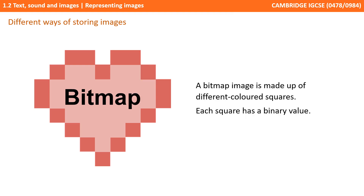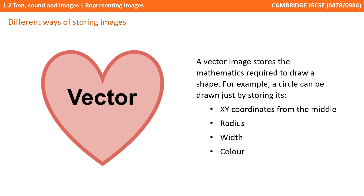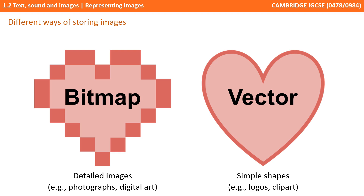With bitmaps, an image is made from lots of different coloured squares, each square having a binary value. With vectors, the mathematics to draw the image is stored instead. For example, a circle can be drawn if you know the x and y coordinates from the middle, the radius, the width, and the colour. Therefore, technical drawings and clip art are best stored as a vector, and photographs that are not made out of shapes as a bitmap.